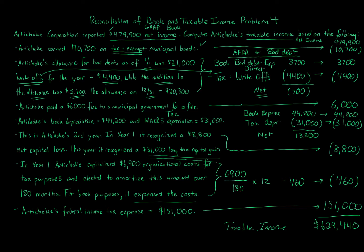So that is the answer — taxable income is $629,440. There are additional problems that walk through these book-to-tax differences; this is meant to be the first baseline example. With depreciation and bad debts, you can either show the gross numbers — add back the book amount and subtract the tax amount — or just show the net effect. Either approach gives the correct result.